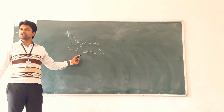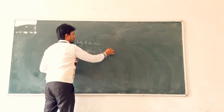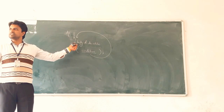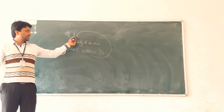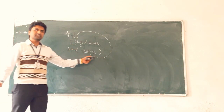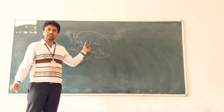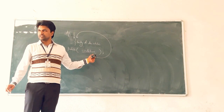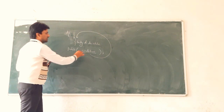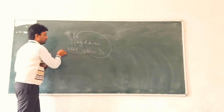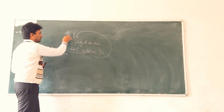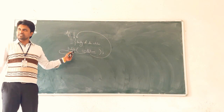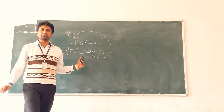If the condition is true, the body of do-while is executed again. Again the condition is checked; if condition is true then again the body of the do-while loop is executed — likewise the loop is executed. If the condition is false, then the cursor goes to the next line after the do-while loop. This is the general syntax and flow of the do-while loop.